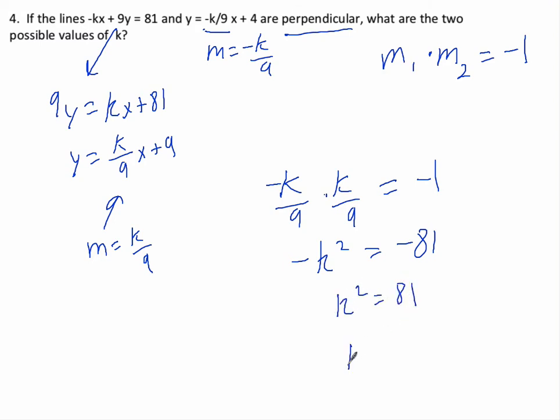And be careful when you're square rooting, because you have to do the positive negative square root. Both are possible here. So your answer is positive or negative 9. So there's two possible values of k.